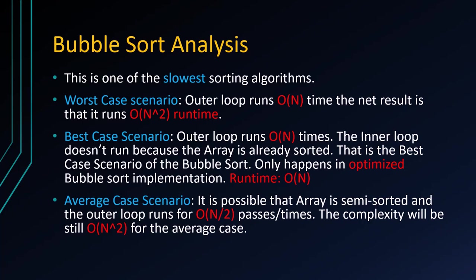Average case scenario. In the average case scenario, it is possible the array or list is semi-sorted and the outer loop runs n/2 or half of the passes. The complexity of the average case is still O(n²) because we do not know how many times this can run. It also uses the optimized implementation.